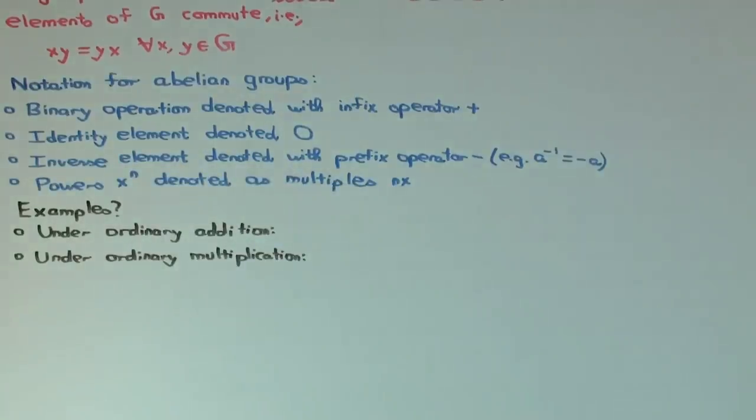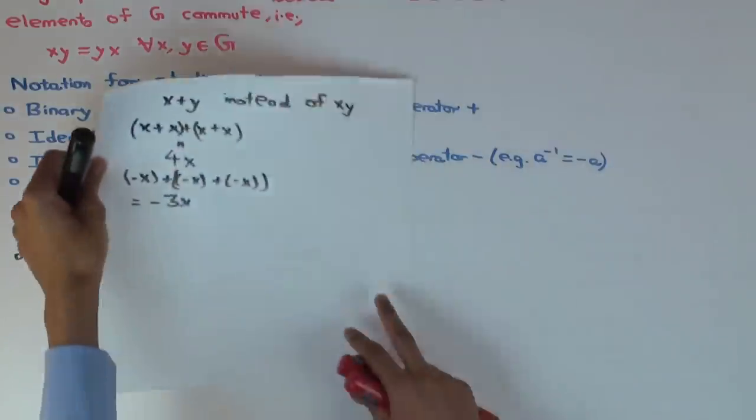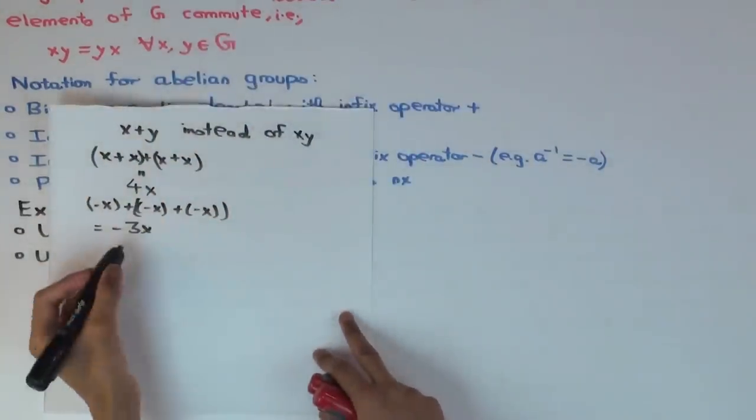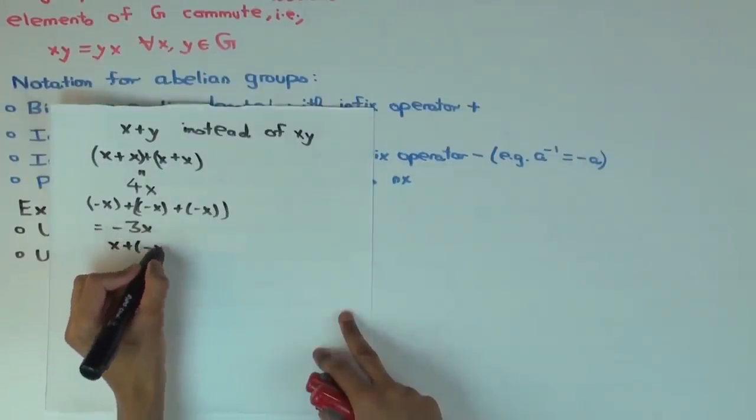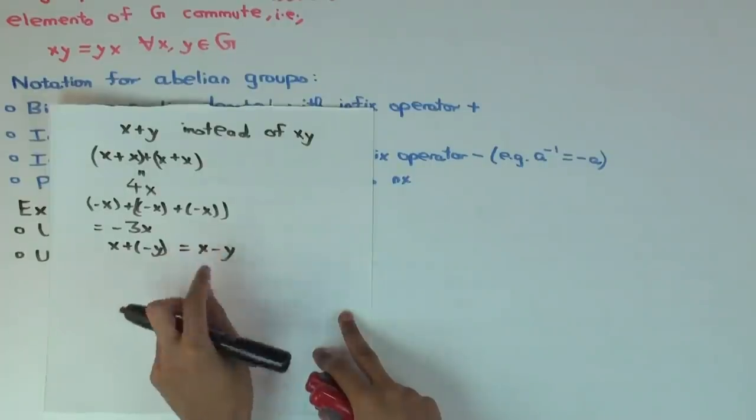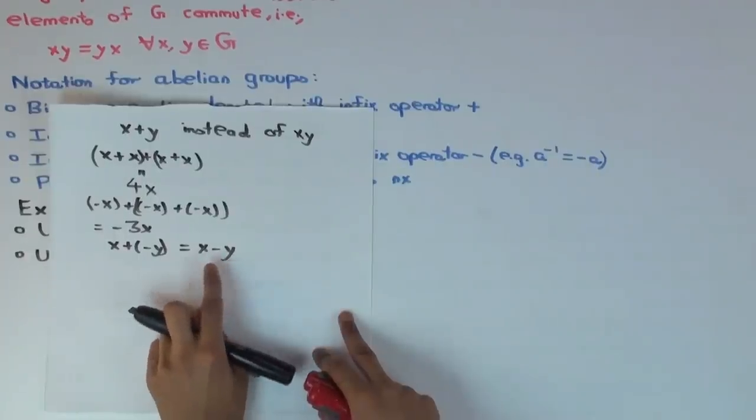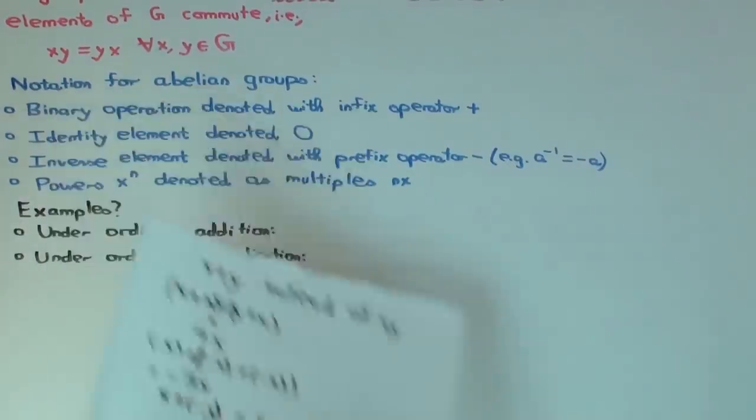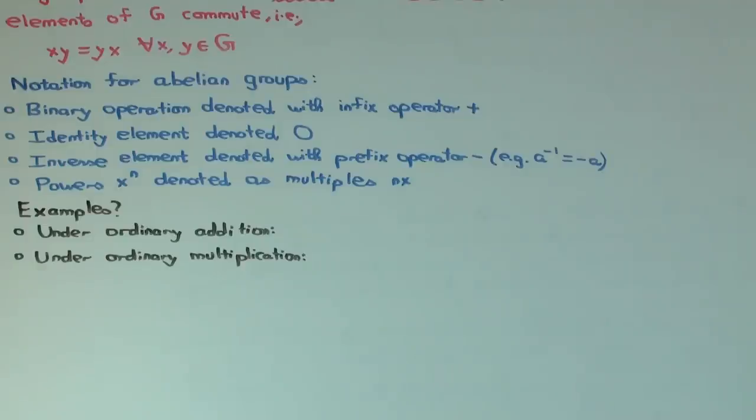Now there's also another shorthand, or sorry, a slight variant of the shorthand, which is if I want to write x plus minus y, I can sometimes write it as x minus y if I want. So when I write x minus y, what it really means is x plus minus y. So I can use this notation for subtraction. So it's just like you deal with addition of real numbers, addition, subtraction of real numbers, integers, etc. So even if I didn't tell you this notation, you would probably guess it, but just for completeness.